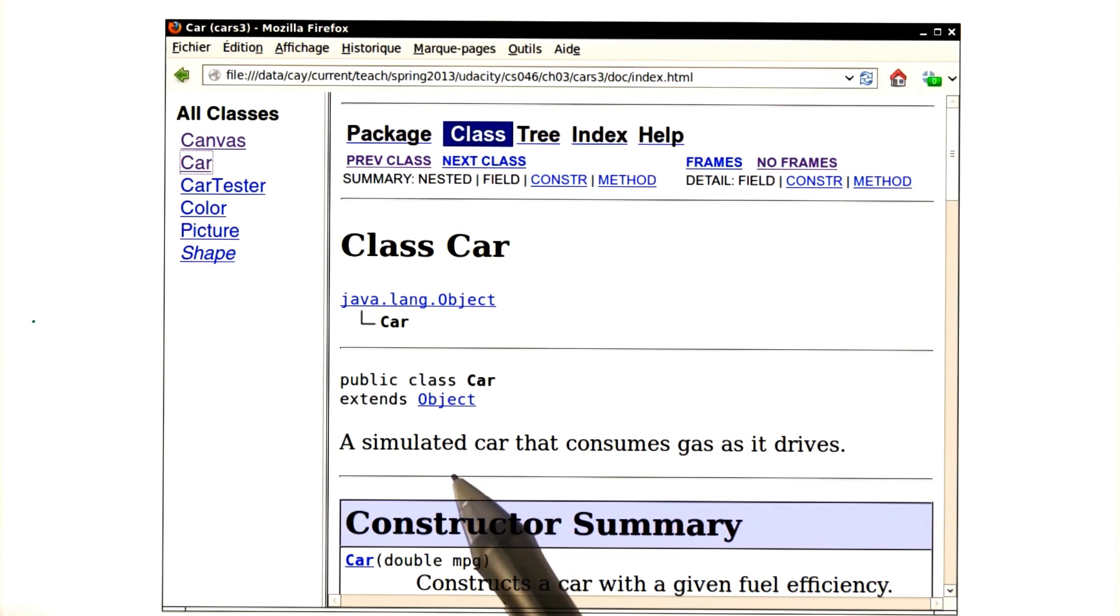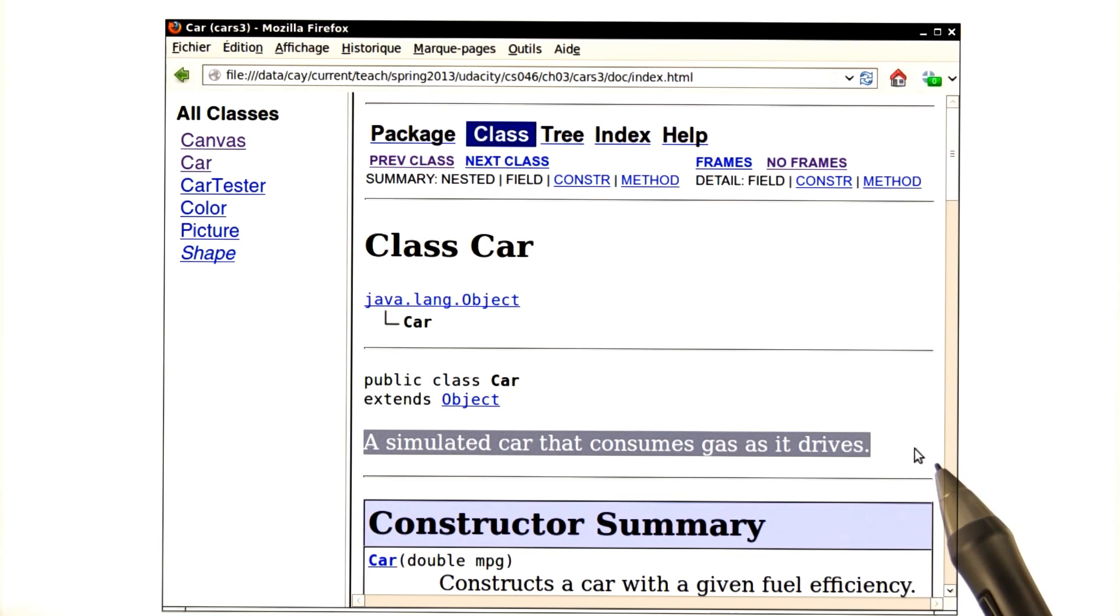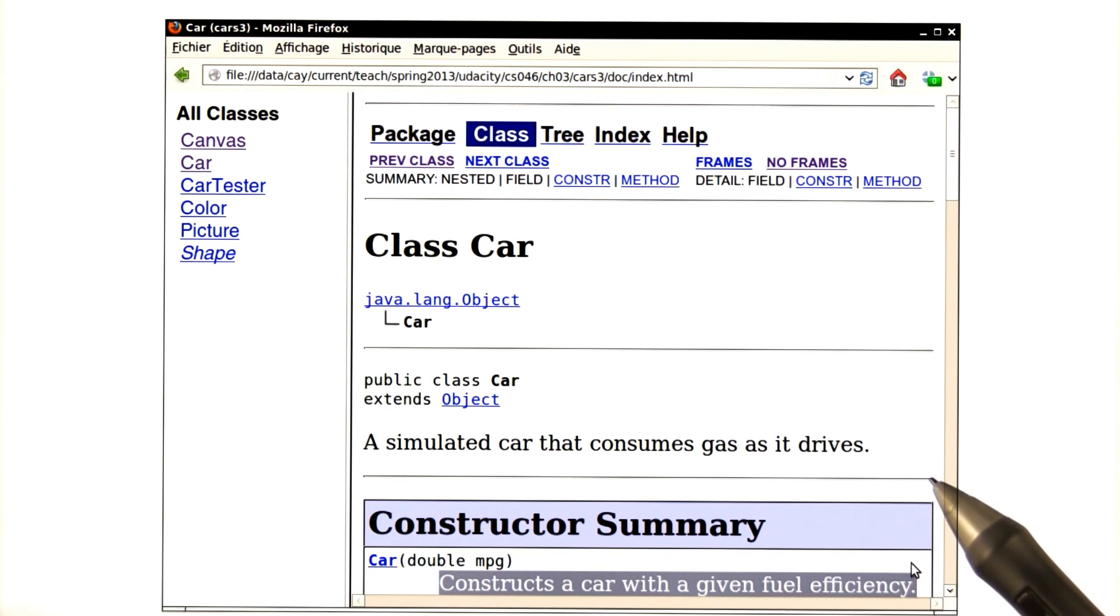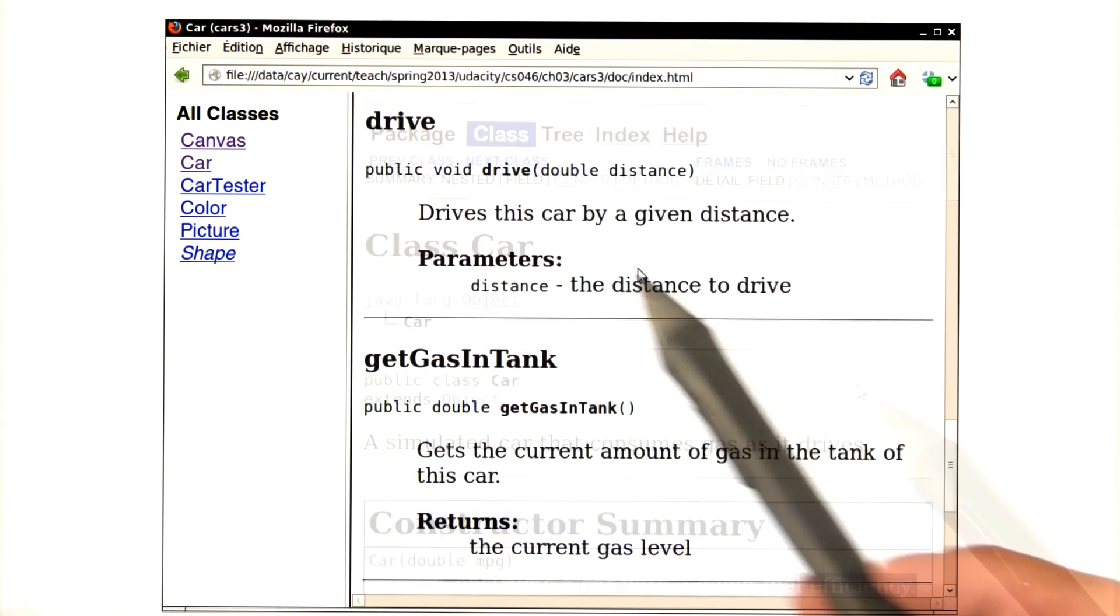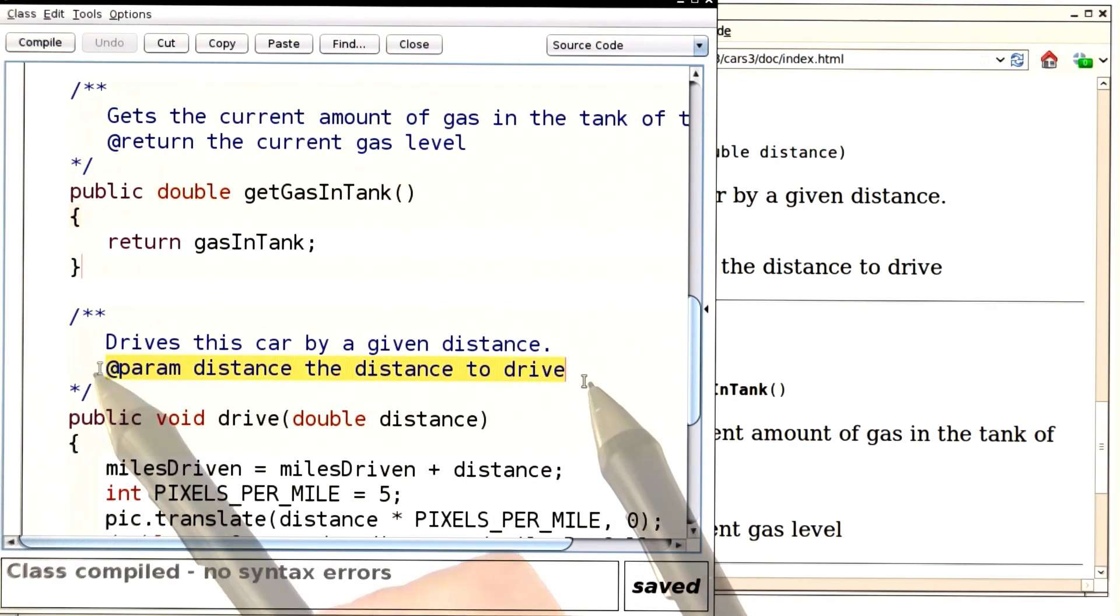And you'll get to see a web page in the familiar javadoc format that contains exactly the same comments that were in the source file. That's what the javadoc tool does. It takes the comments from the source file and puts them into the web page. For example, here, you see the description of a parameter, and that's the exact same description that was provided in the source code.